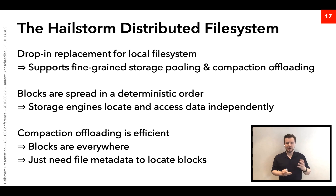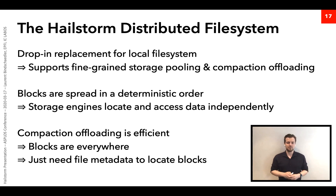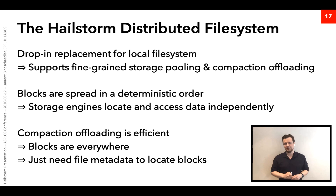In practice, blocks are spread in a deterministic order. Each storage engine has its own files automatically cut into small blocks and spread deterministically, meaning each storage engine can locate and access its own data independently without a centralized metadata server. This file system also makes compaction offloading efficient: because blocks are spread everywhere, offloading to another machine within the rack only requires sending the file metadata — not the data itself — allowing the remote machine to locate the blocks and run the compaction.